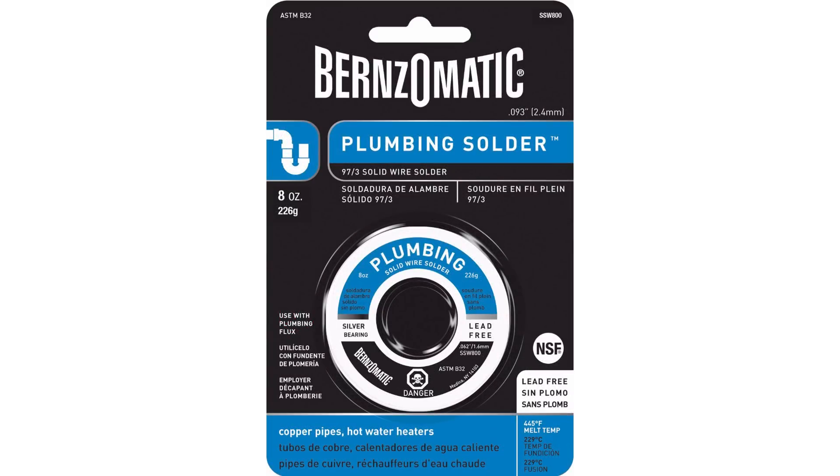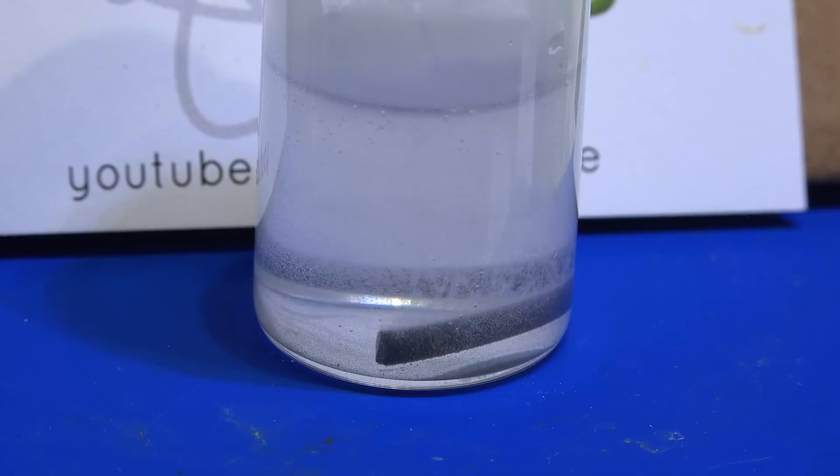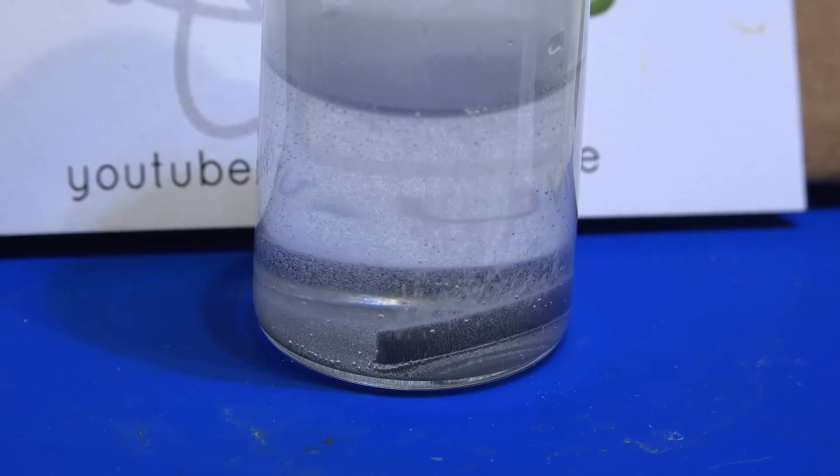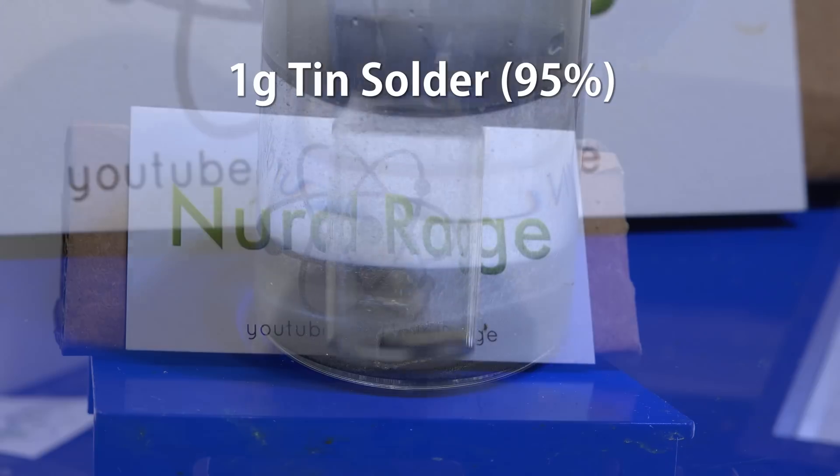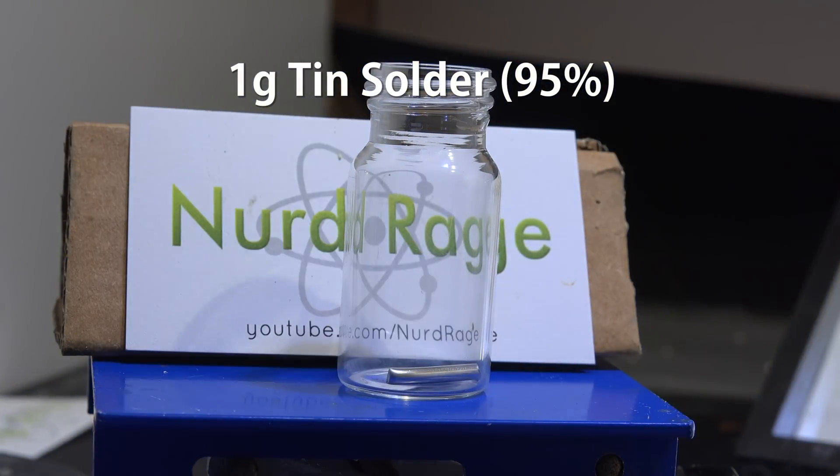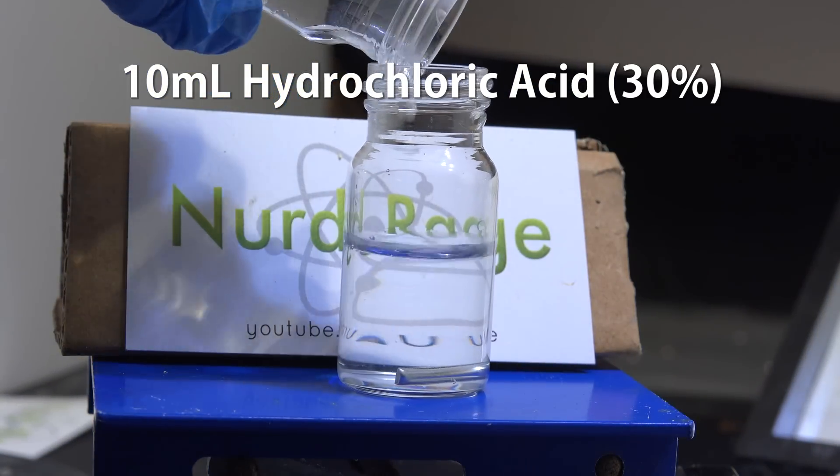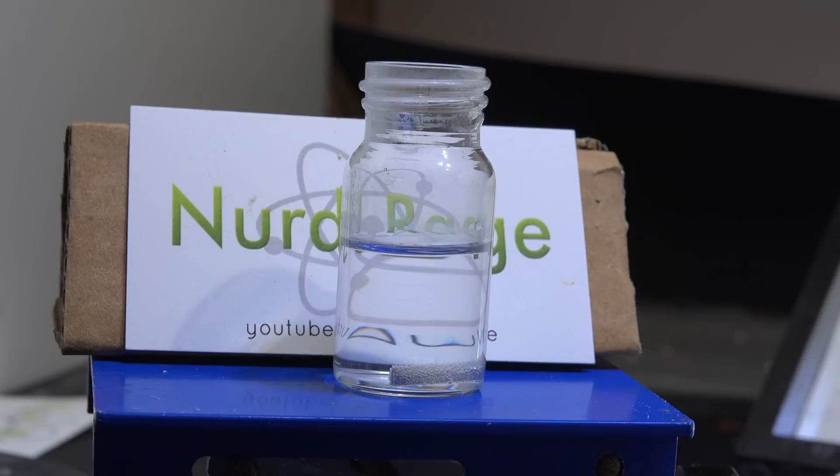We don't want the flux interfering with our work. Now we need to convert it into tin chloride, also known as stannous chloride. We get one gram of tin solder and add to it 10 mL of 30% hydrochloric acid. It should start bubbling.